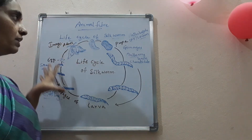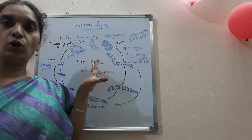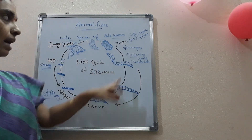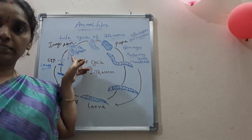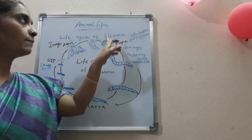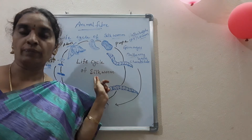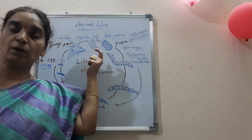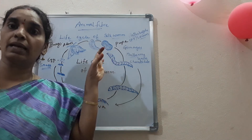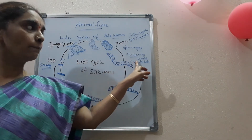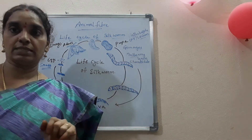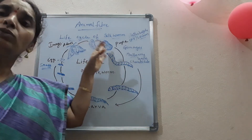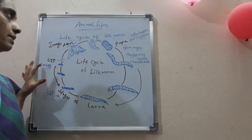Up to now you know the different stages of the silkworm. Silkworm undergoes four stages in its life cycle: egg, larva, pupa, and adult. We get silk at the pupa stage of the silkworm. It releases saliva from its mouth which, when exposed to air, becomes strong. It normally feeds on mulberry leaves in the larval stage. Next, we will see how silk is produced and the different processes involved.